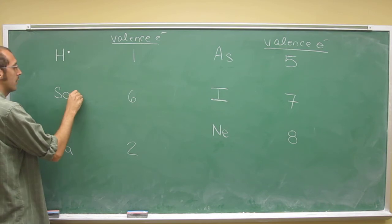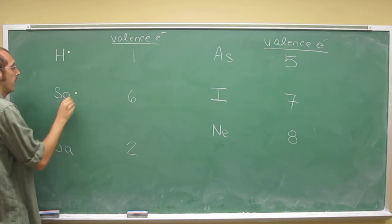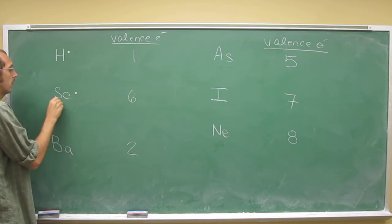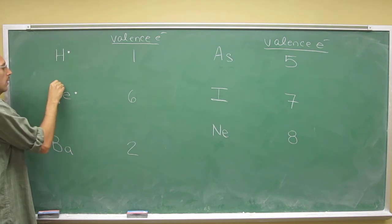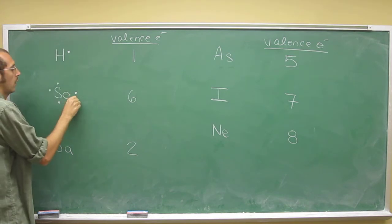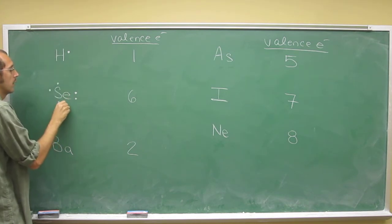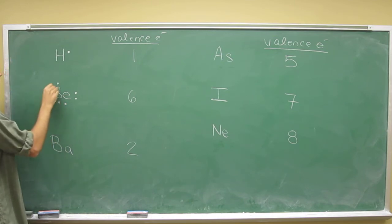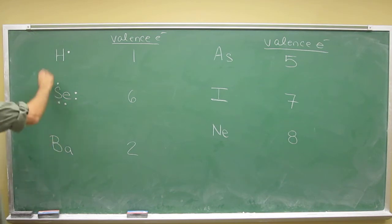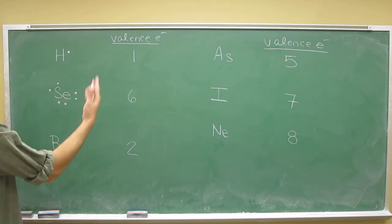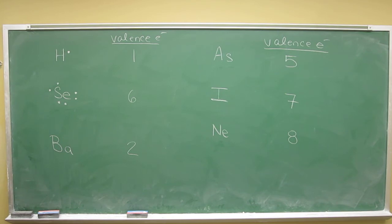Selenium, six, so you just go around. One, two, three, four, five, six. So it's got two valence electrons, or two orbitals that are unfilled. So it can make two bonds, essentially is what we're going to get at.